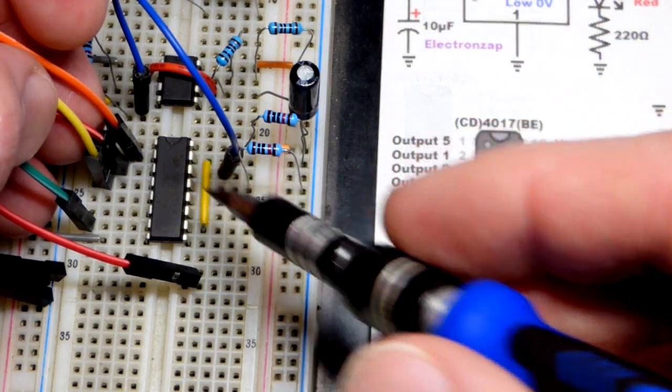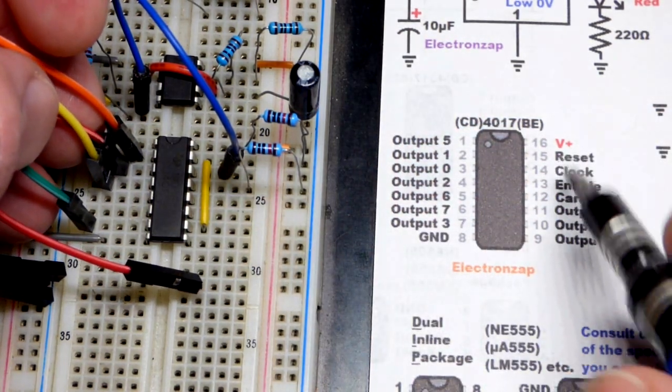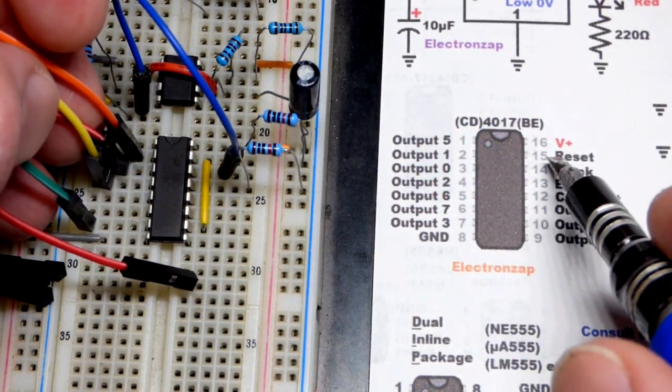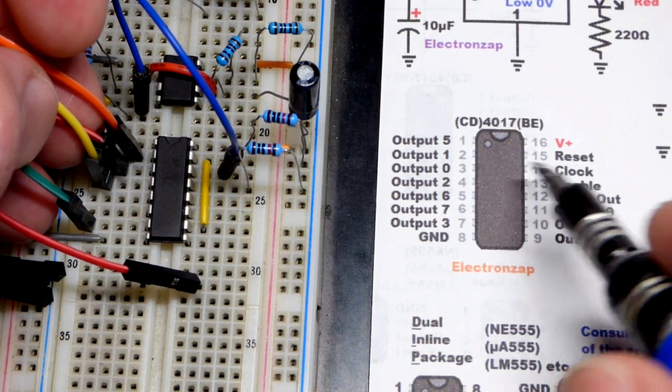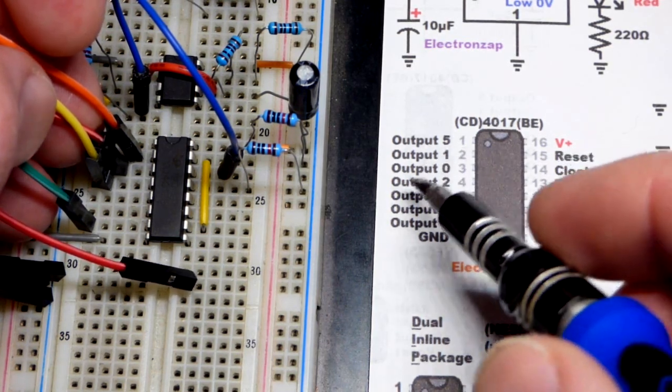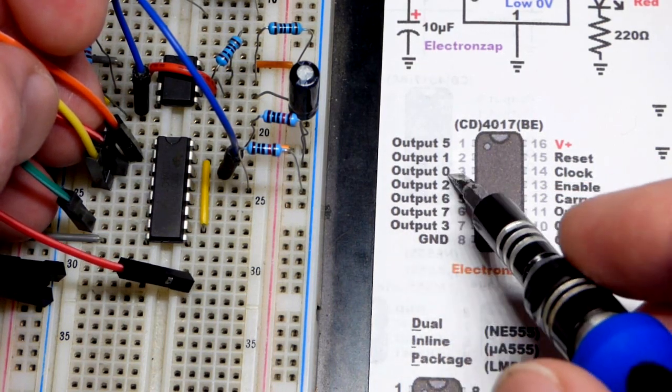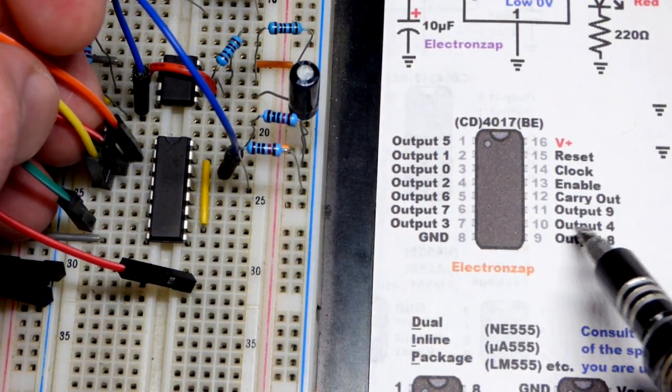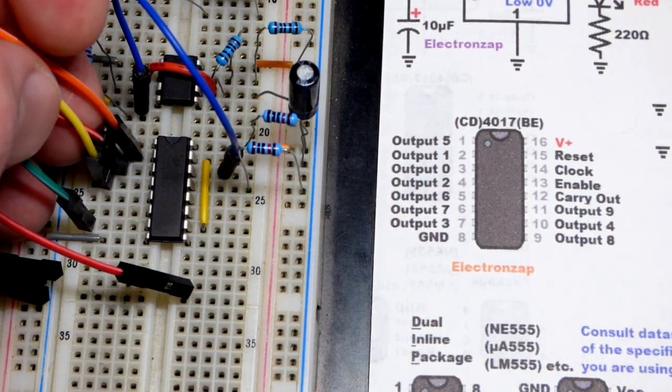Instead we're bringing it up to the reset pin. And so ultimately that will give the reset pin a high output. It will reset the 555 timer, which puts the output 0 back to high. And output 4 goes back to low, of course.